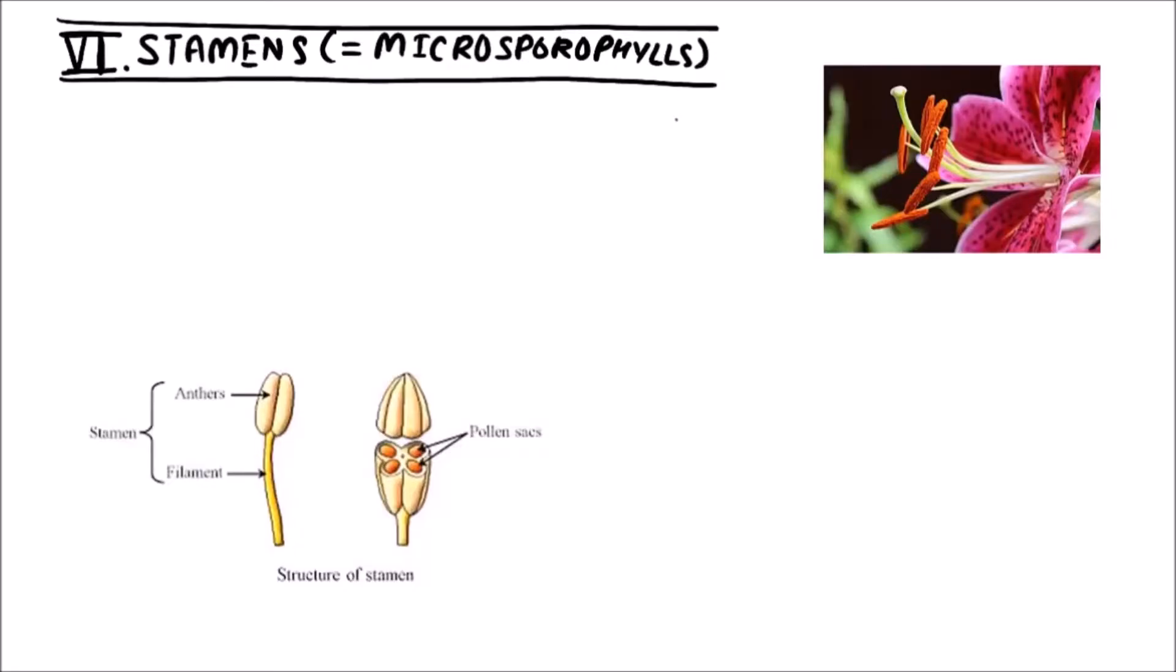Welcome to Studio Biology. In this video, we are going to discuss the structure of stamen. Stamen is equivalent to the microsporophyll and all the stamens in the flower constitute androecium.